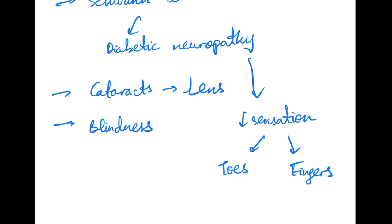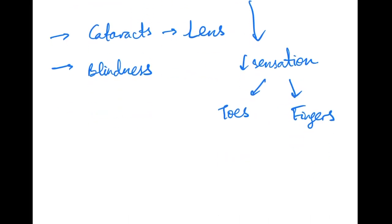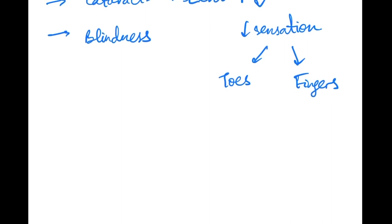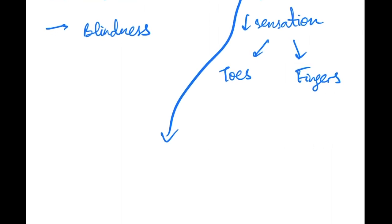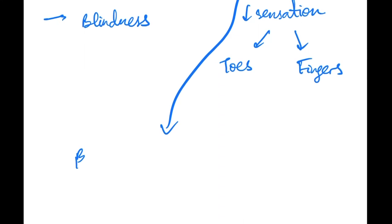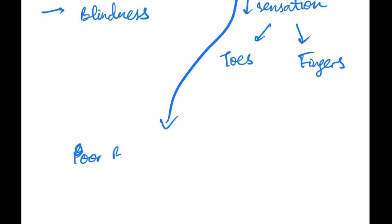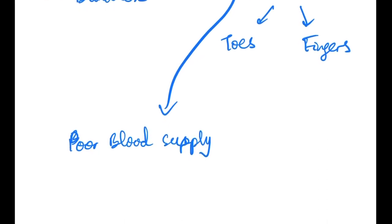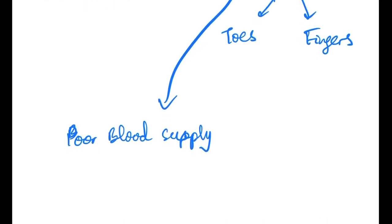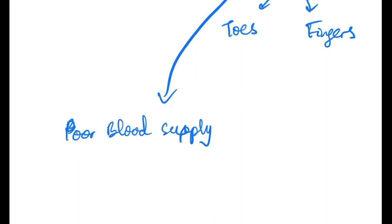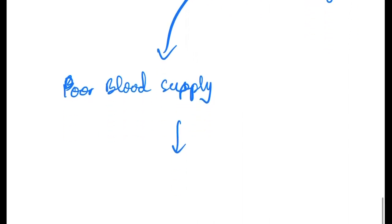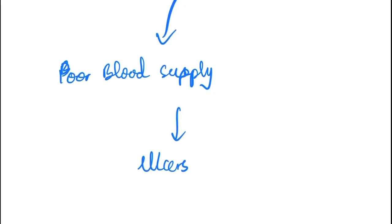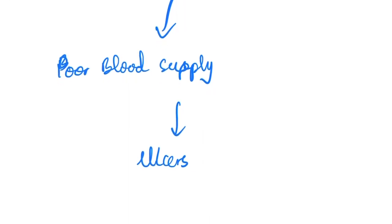With diabetic neuropathy, we also have an extreme case wherein the individual would have poor blood supply because of non-enzymatic glycosylation, as well as nerve damage causing ulcers. In case the ulcers get really bad, the individual would have to amputate his or her limb.